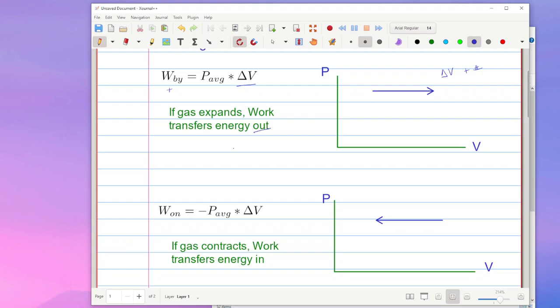And the energy is transferred out of the system. If you've got a process moving towards the right, the gas is contracting or being compressed, then the change in volume is actually a negative number. Now if I put the negative into my equation up here on top, then I would end up having a negative work done by the gas.